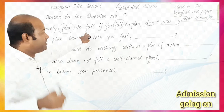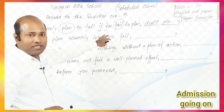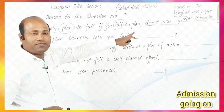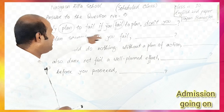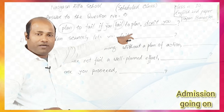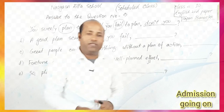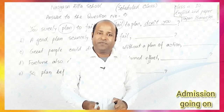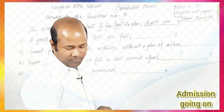Whenever you see a sentence, ask: what is the subject? If you don't have the subject clearly, identify it. If the sentence is assertive, and the sentence is affirmative, then the tag will be negative. That is the rule — affirmative sentence gets a negative tag.